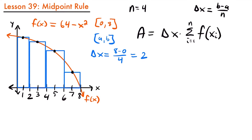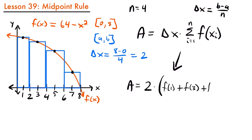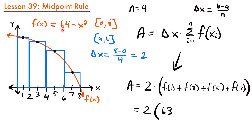Using our value of delta x and our x sub i values, the area equals 2 times the sum of f(1) plus f(3) plus f(5) plus f(7). Plugging into our function f(x) = 64 minus x squared: f(1) equals 64 minus 1 squared, which is 64 minus 1, equal to 63. Then f(3) equals 64 minus 3 squared, and 3 squared is 9, so 64 minus 9 equals 55.